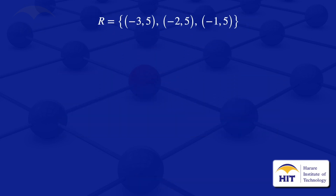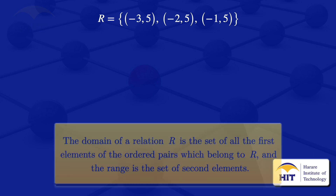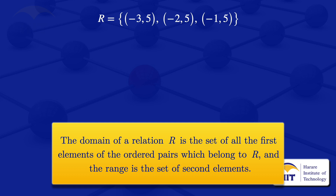We are asked to write down the domain and range of that relation. By definition, the domain of a relation is the set of all the first elements of the ordered pairs which belong to the relation r, and the range is the set of the second elements in the ordered pairs of the relation r.